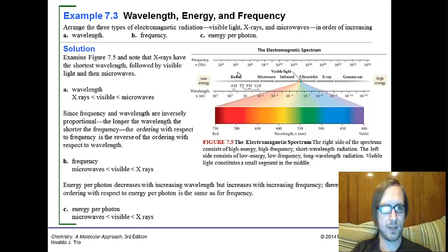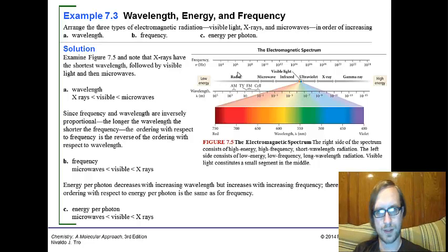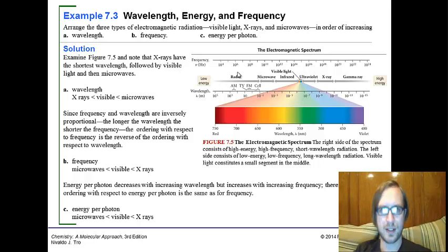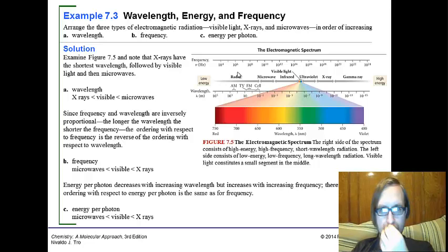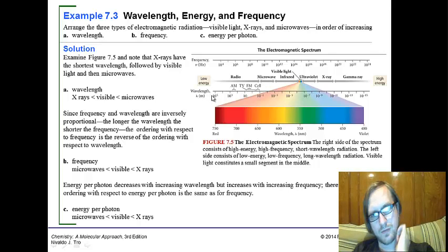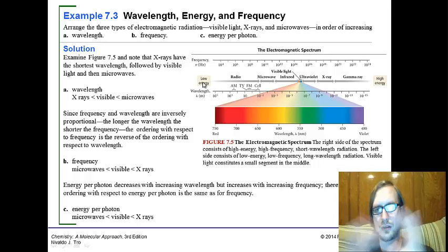Wavelength and frequency are inversely proportional. So the longer the wavelength, the shorter the frequency. The ordering with respect to frequency is the reverse of the ordering with respect to wavelength. It helps me to tie this back with energy. Low wavelengths, like jamming it all together, is high energy. So X-rays have the lowest wavelength because they have the highest energy, followed by visible, and then microwaves have the lowest energy because they have a higher wavelength.